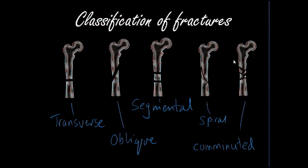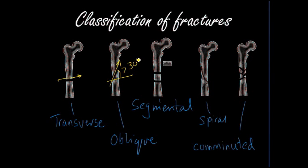When classifying which type of fracture you see on the x-ray, here's an example of a transverse fracture, where a direct force hits the bone and makes a transverse fracture. An oblique fracture is where the force itself is oblique, resulting in an angled fracture line. The key thing to remember is: if the fracture line is greater than 30 degrees it's considered oblique; if it's less than 30 degrees it's considered transverse.